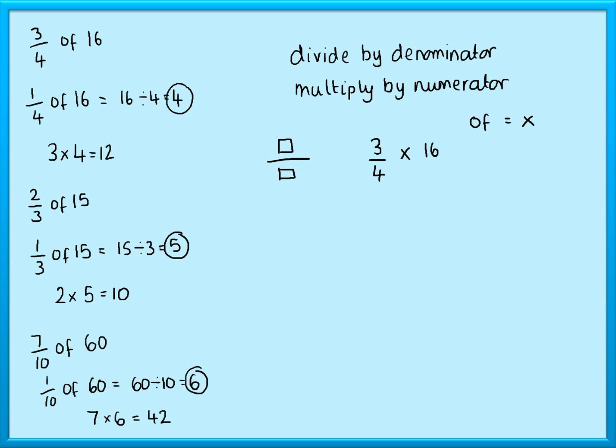Either type it in using your fraction button—you'd put in three-quarters times 16—or if you don't have a fraction button, you could interpret that fraction line as a divide, so you'd write 3 divided by 4 times 16. And that's how to work out fractions of amounts with and without a calculator.